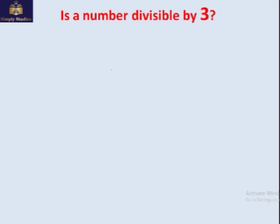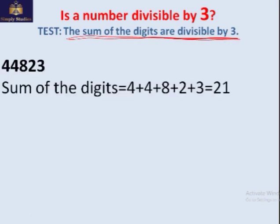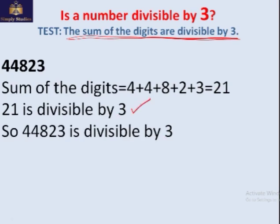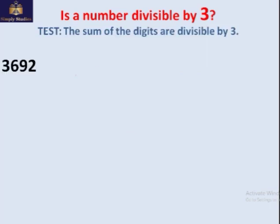Now, is any number divisible by 3? The rule is: the sum of the digits must be divisible by 3. We add the digits and see what we get. For example, take the number 44823 — 4 plus 4 plus 8 plus 2 plus 3 gives 21. Is 21 divisible by 3? Yes, so the number is also divisible by 3 with no remainder.